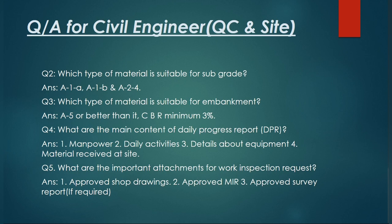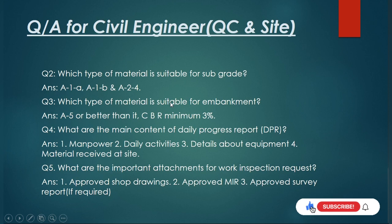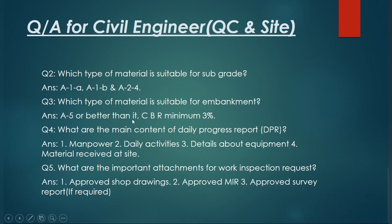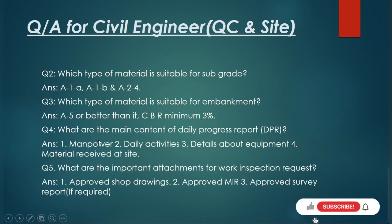Question number three: which type of material is suitable for embankment? For embankment, we can use A2 or better material, but the CBR value for the embankment material should be a minimum of three percent.